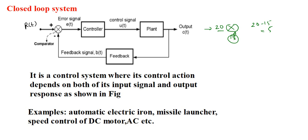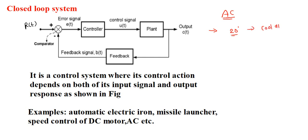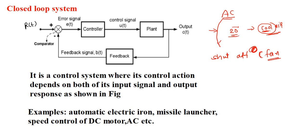Examples of closed loop system are automatic electric iron, missile launcher, speed control of DC motor, and air conditioner. Taking the example of AC: if we set the temperature of AC at 20 degrees Celsius, it gives cool air to the room up to 20 degrees Celsius and its compressor rotates continuously. But when the temperature of the room becomes cool enough, it automatically switches off the compressor fan because the room has reached the set temperature of 20 degrees Celsius.